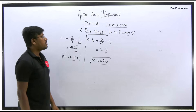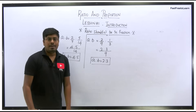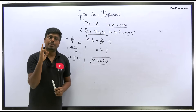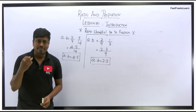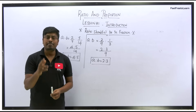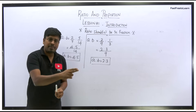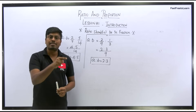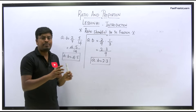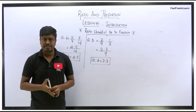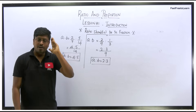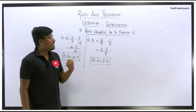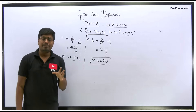The most important point here is: the ratio value should not be in fraction form at any point — even in the final answer, it should be an integer. If you get the final answer as a fraction, take the LCM, cancel it, and express the answer as an integer. If the given question already has fractional values, first convert them to integers using LCM, then start solving the question. Always keep this rule in mind.